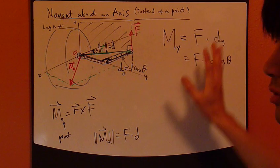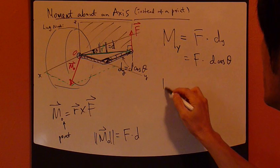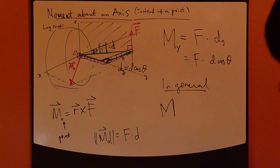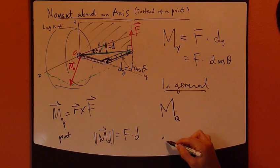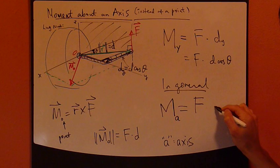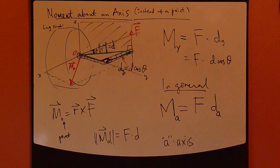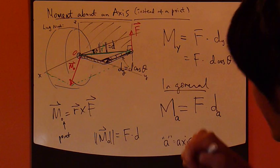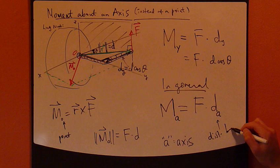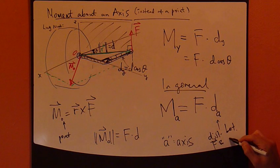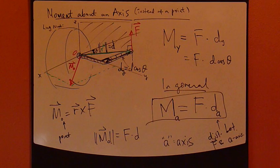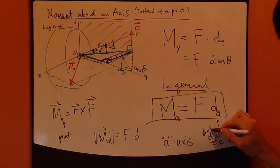So we can extend this to any general axis. In general, the moment of a force about any axis, some axis A, equals the magnitude of the force times the distance, distance between the line of action of the force and axis A. Call it D_A, the distance between force and A axis. The shortest distance.